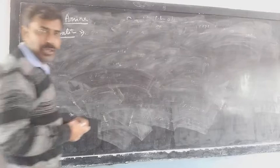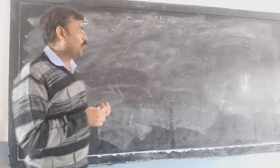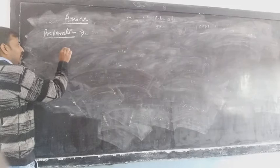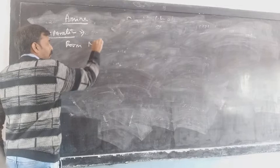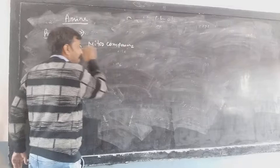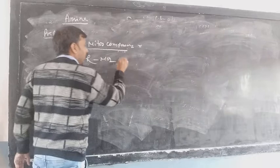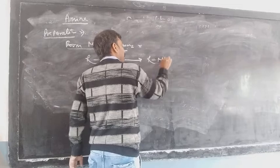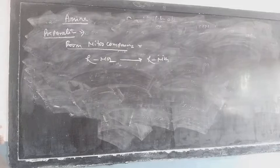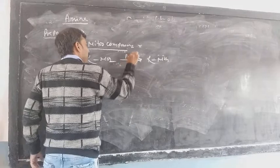Now we are going to see the preparation of the amine using different methods. The first method is by reduction — from a nitro compound. This is R-NO2. The removal of oxygen and addition of hydrogen takes place; this process is called reduction. We reduce the material using palladium in the presence of hydrogen, and after reduction it forms the amine.